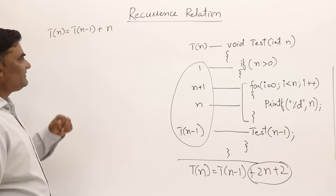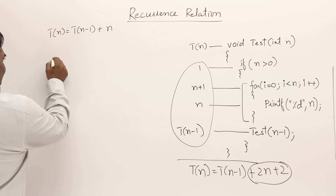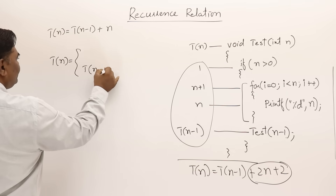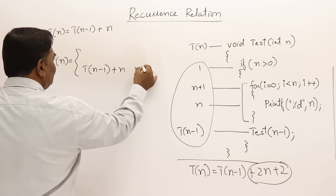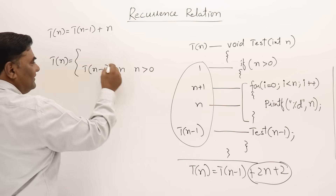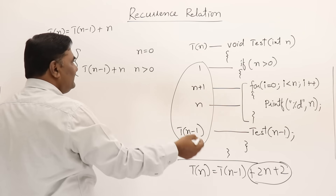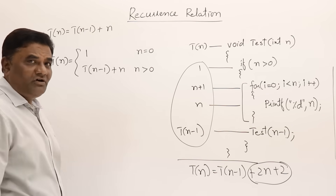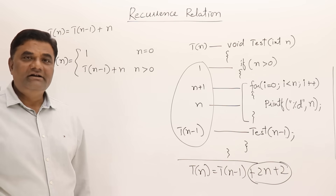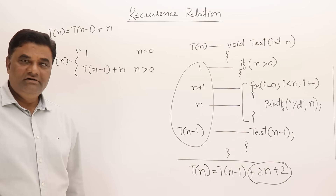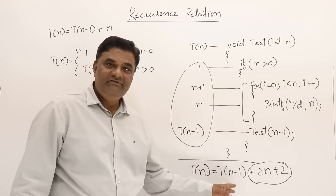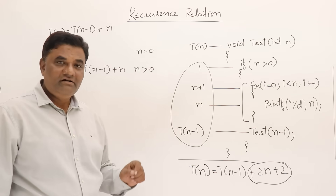Now this is the recurrence relation I got. Let us set it up formally: T(n) = T(n-1) + n for n greater than 0. When n equals 0, the function does nothing, so T(0) = 1 (or some constant). So here we have learned how to prepare a recurrence relation from a given algorithm or function.